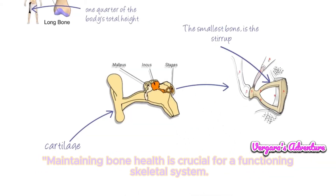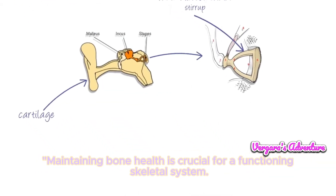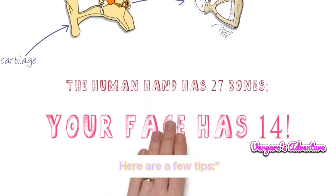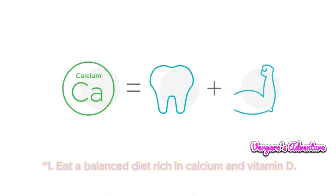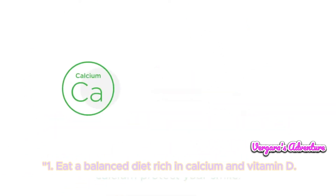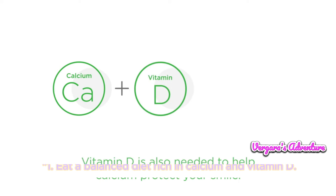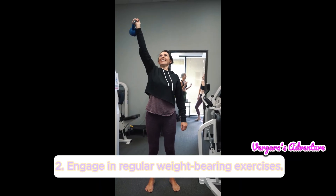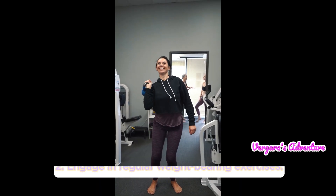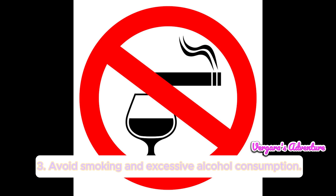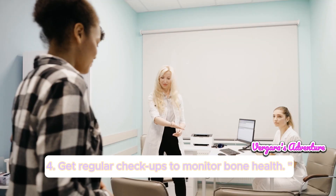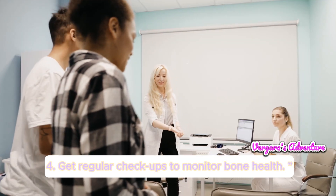Maintaining bone health is crucial for a functioning skeletal system. Here are a few tips: first, eat a balanced diet rich in calcium and vitamin D; second, engage in regular weight-bearing exercises; third, avoid smoking and excessive alcohol consumption; and fourth, get regular checkups to monitor bone health.